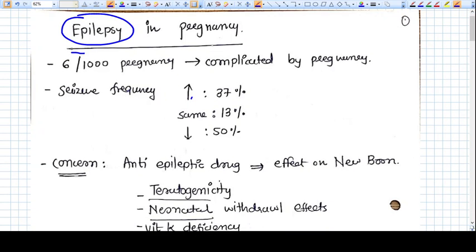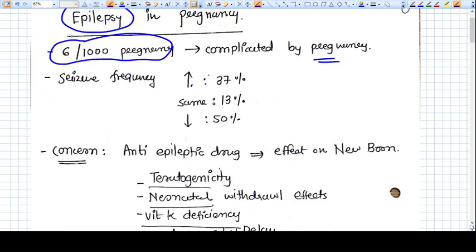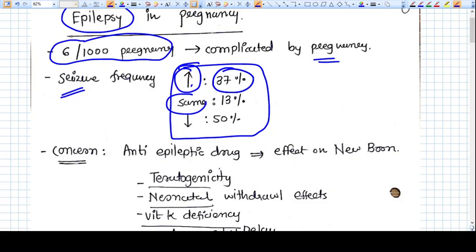6 out of 1000 pregnancy is complicated by seizure disorder. This is a very important parameter. Seizure frequency is increased in 30% cases of pregnancy, remains the same in 13% of pregnancy, and decreased in 50% of pregnancy cases.